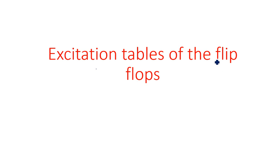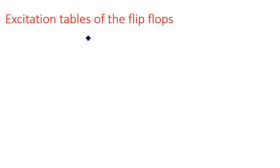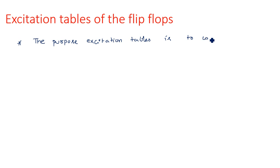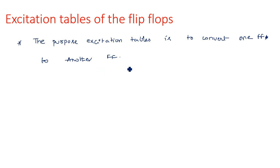Hi everyone. In this video I am going to explain about the excitation tables of flip-flops. Excitation tables are very important when you are going to convert one flip-flop to another flip-flop. For example, converting an SR flip-flop to JK flip-flop, JK flip-flop to D flip-flop, or D flip-flop to T flip-flop. In such conversions we can use these excitation tables to get the expression for the input.